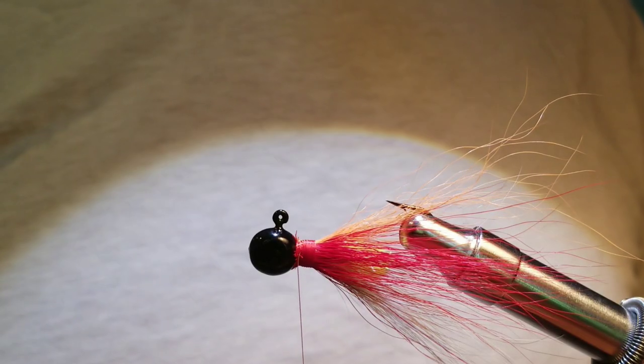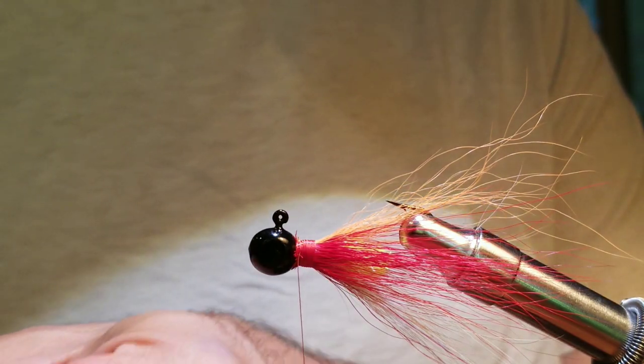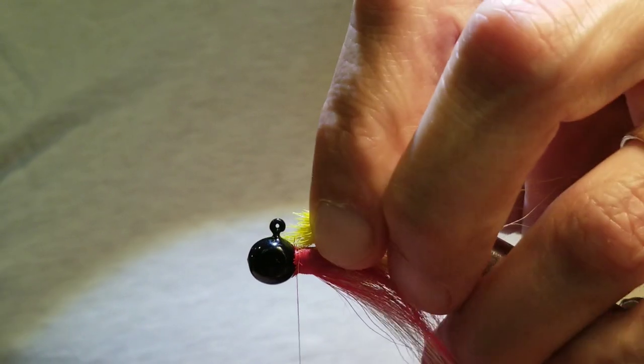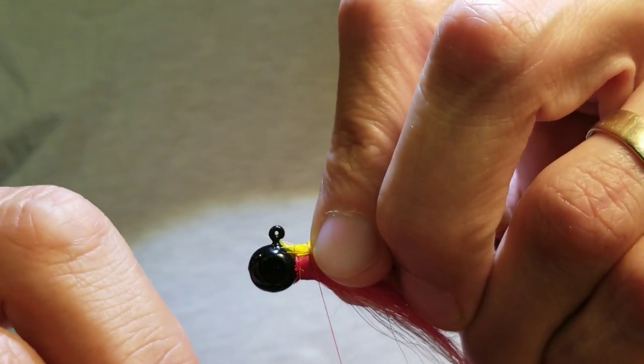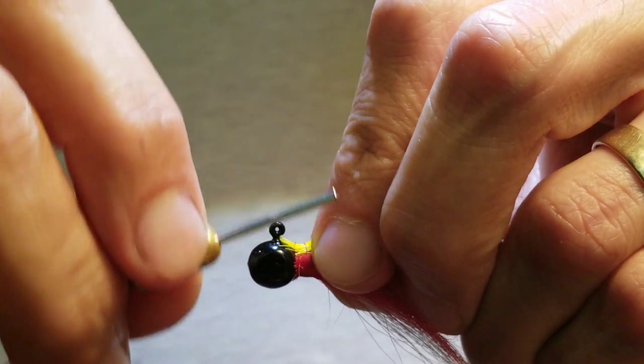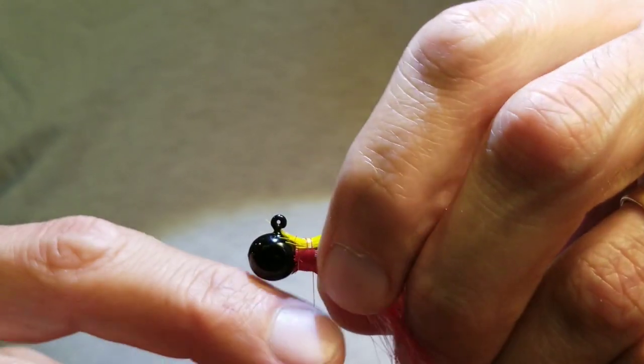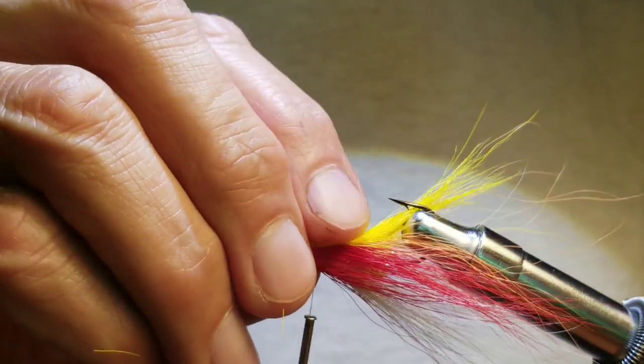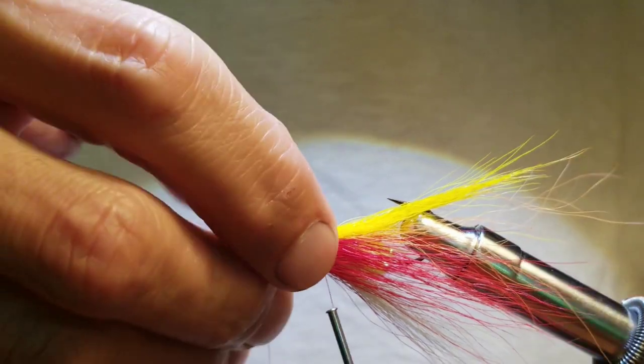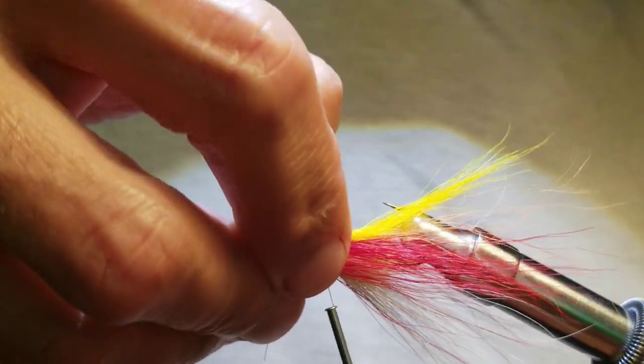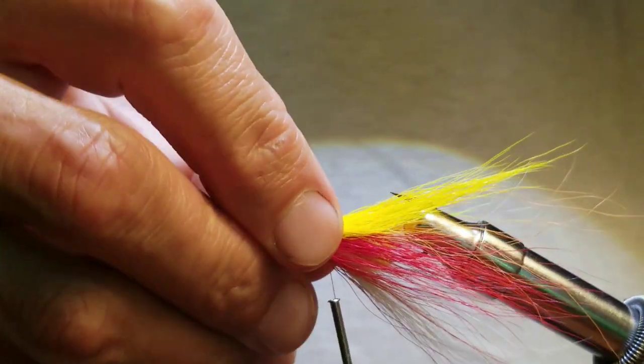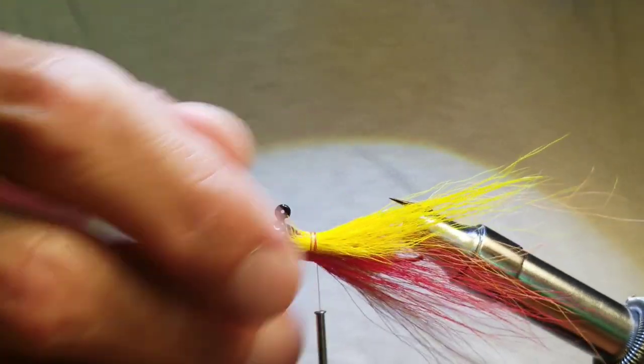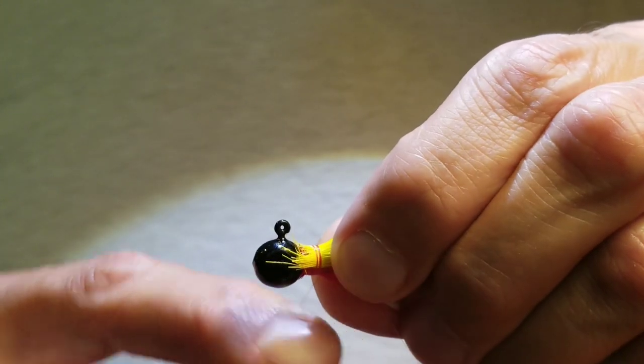Okay, the final color is going to be yellow, and that's going to be the top of the jig. So I got a little clump of bucktail here. I'm going to spread that out with my thumb now.